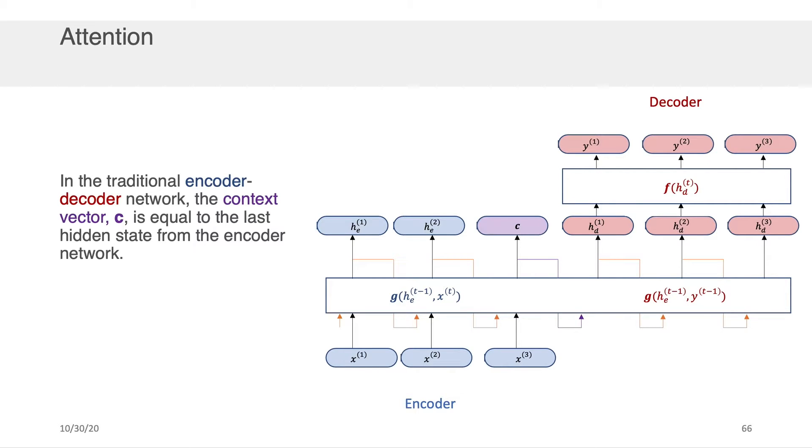First of all, recall that in the traditional encoder-decoder network, the context vector c is just equal to the last hidden state from the encoder network. Basically we take whatever is generated at he1, pass that in with x2 to generate he2, that's passed along and combined with x3 so that we can generate this final context vector c, which reflects something about everything in the sequence here.